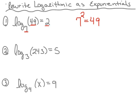Let's try number two: log base three of two forty three equals five. We're going to start with the base, which is three. That three needs an exponent — the exponent is five — and it equals the argument, which is two forty three. Therefore we end up with the exponential three to the fifth power equals two forty three.